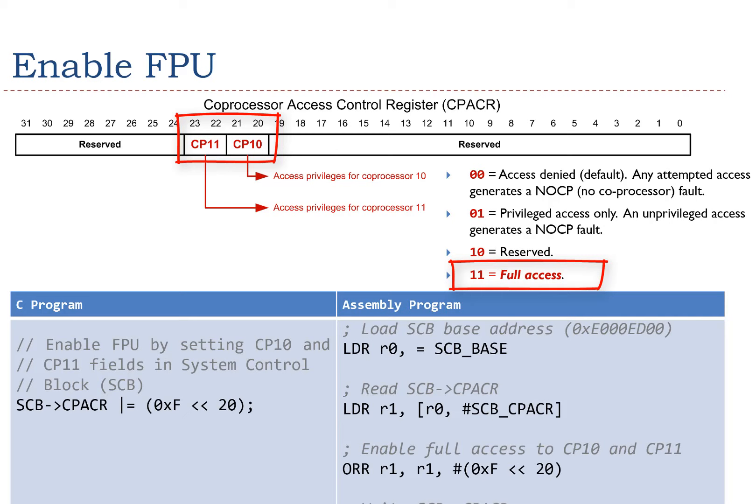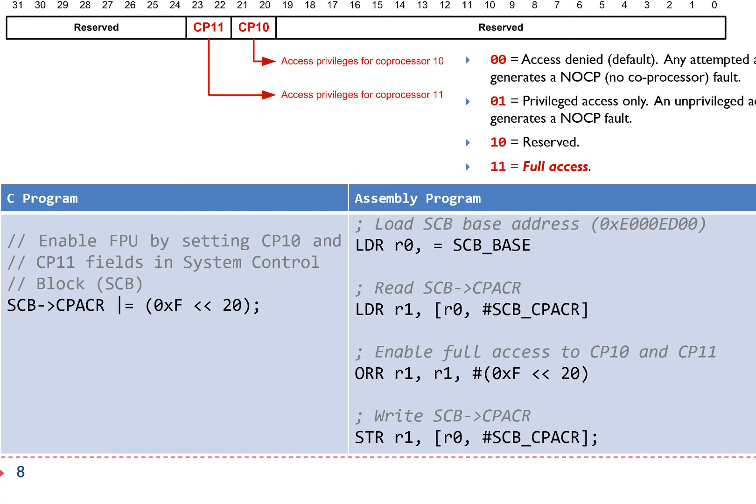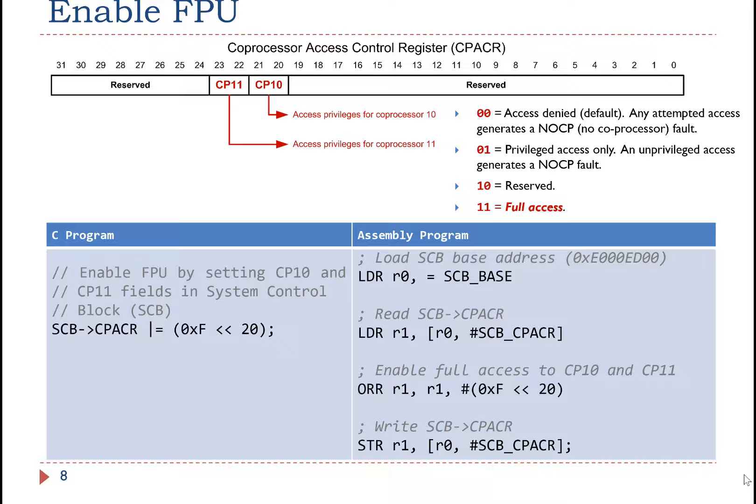Here is the example code in C and assembly. Note that CPACR can only be written if the processor is in the privileged mode.